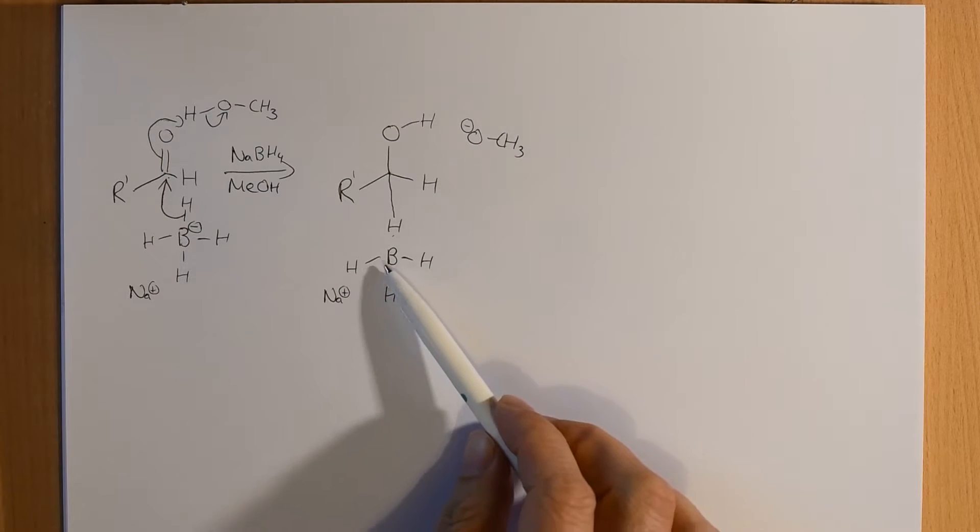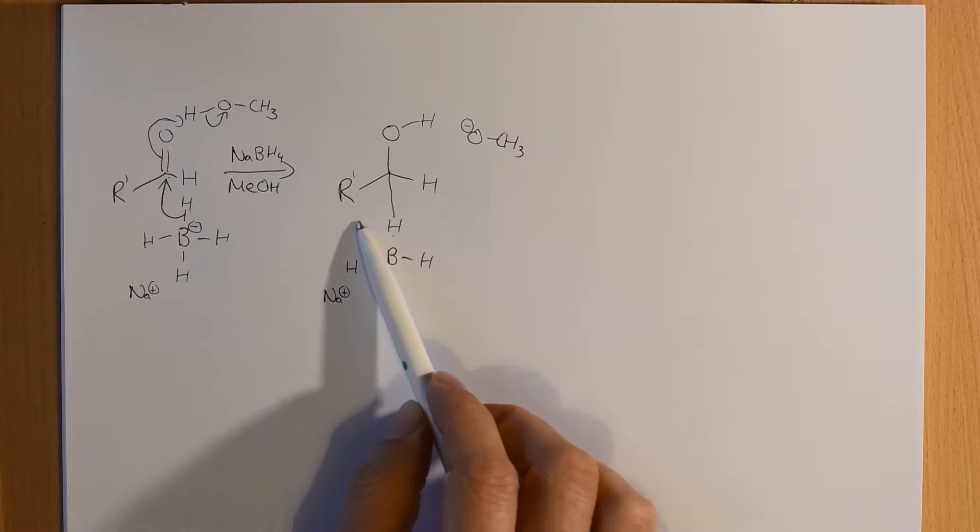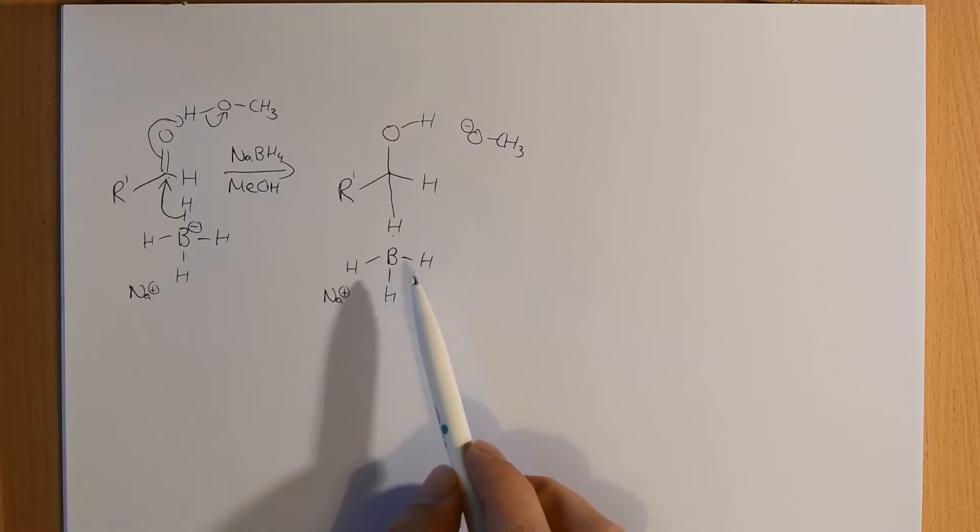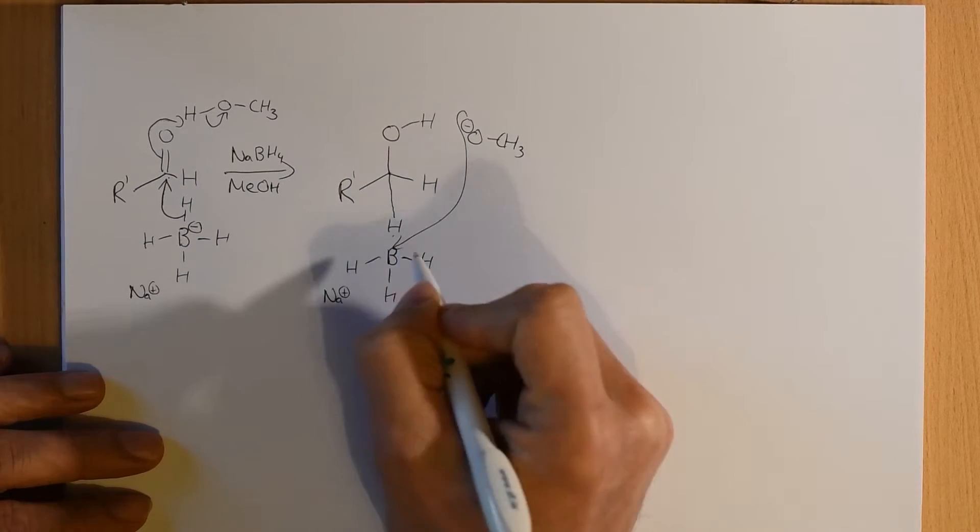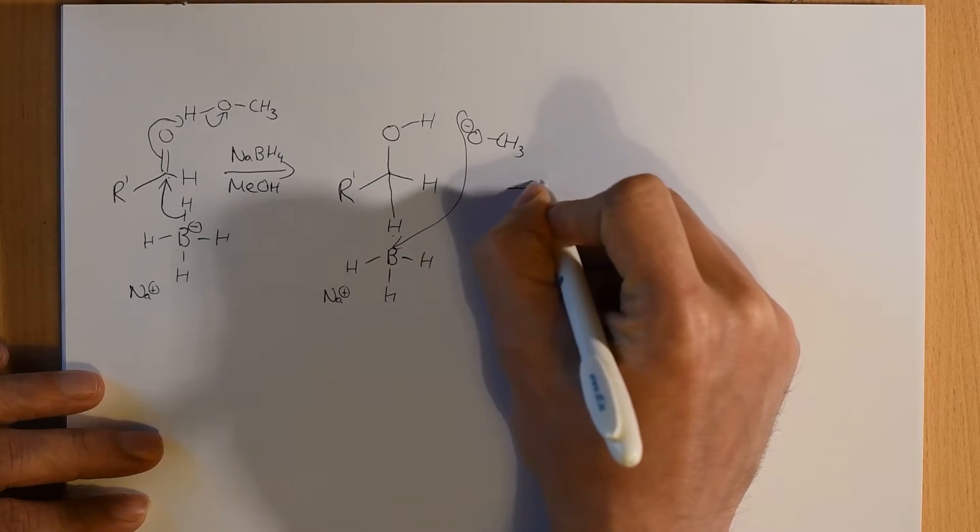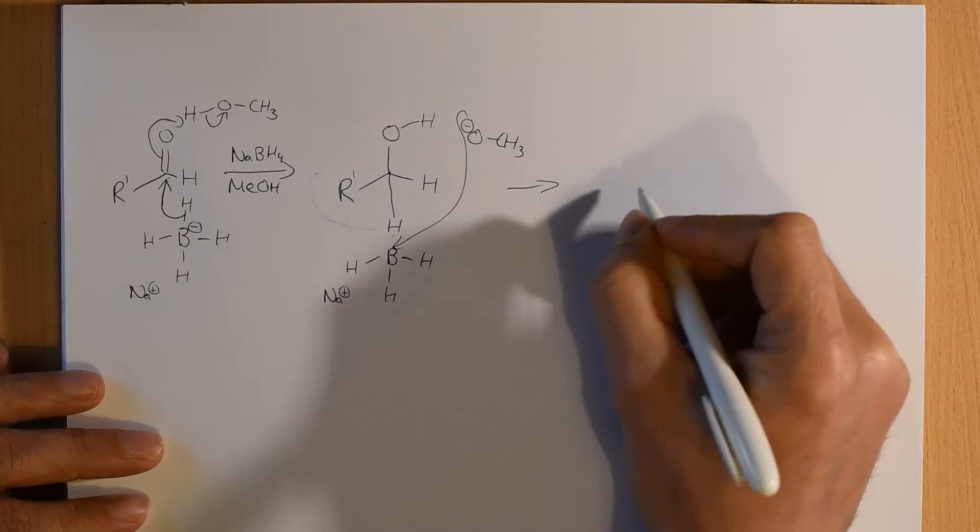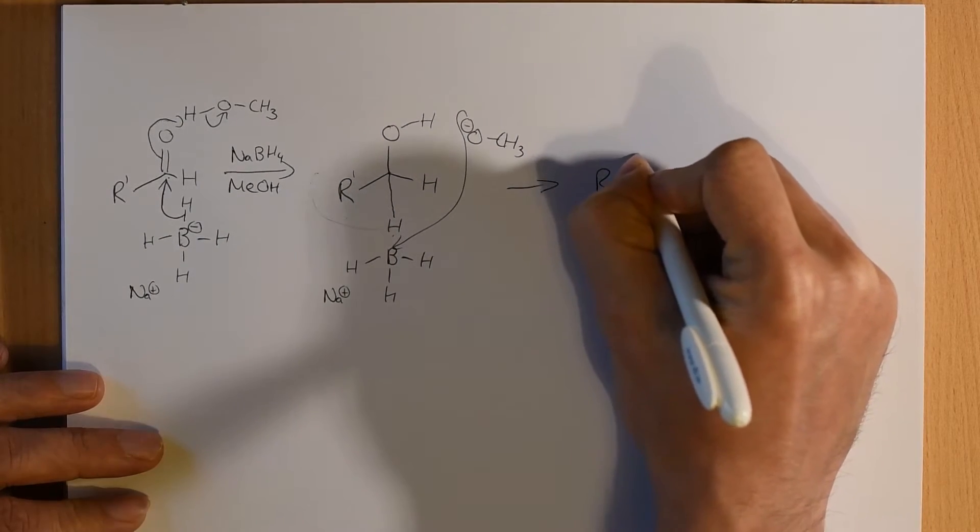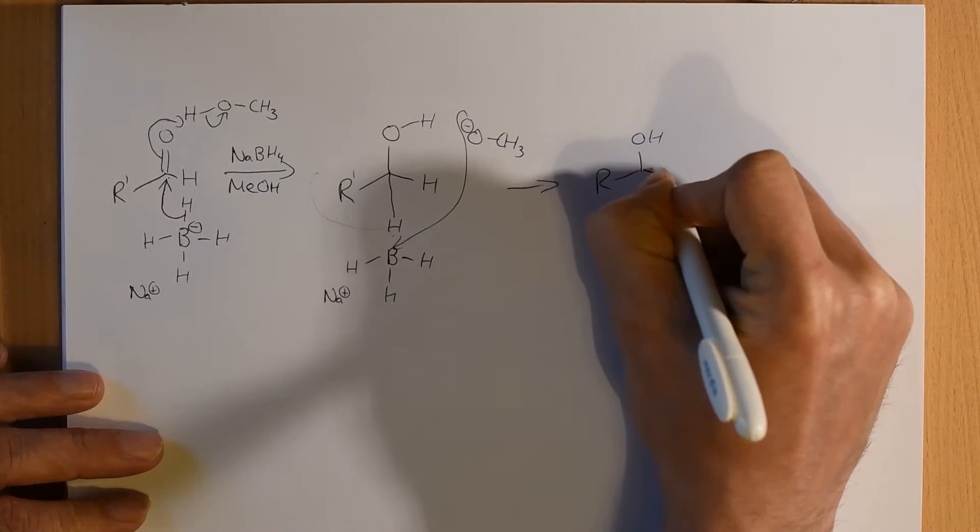The methoxide will almost immediately attack the borane because this now has an empty P orbital and this has a negative charge. So, that's going to attack. And what you're going to end up with is our primary alcohol has been produced. So, we still have our primary alcohol. That's our product done.